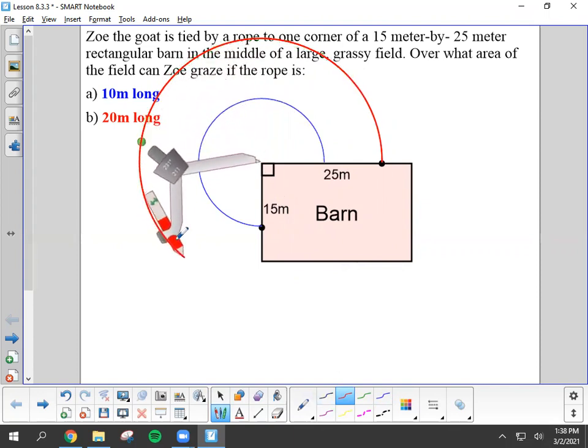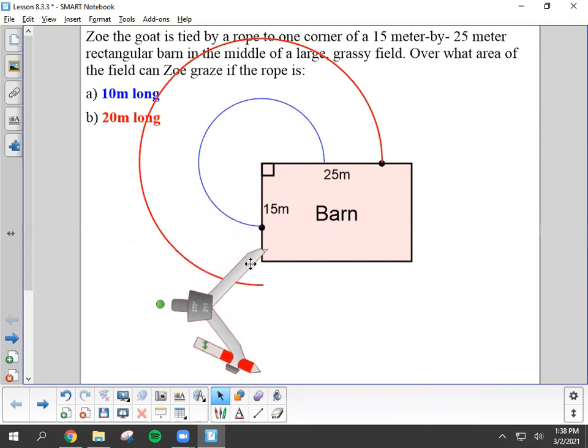But once her 20 meter rope hits here, it's actually going to catch on this side of the barn. So 15 of the 20 meters would be going alongside the edge of the barn. And then what's going to happen is that leftover of the 20 meters, which if 15 is lining up along this edge of the barn, the leftover would be five more meters.